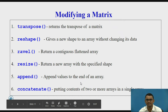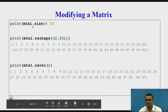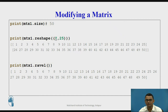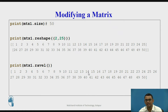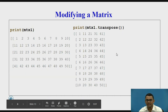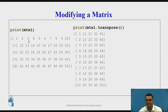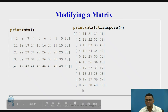Let us see examples of these functions, continuing with the same matrix of size 50. When I call reshape with two rows and 25 columns, it changes the shape and prints the same elements of MTX1 in two rows and 25 columns. When I call ravel, it takes all elements from MTX1 and prints a contiguous one-dimensional array. When I call transpose, all elements in the first row become the elements in the first column, and so on.